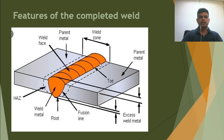This line is the toe — you can consider it on this side and on the root side also. This is the weld metal. This is the heat affected zone. This is called the root. This is called the fusion line. This is called the excess metal — from here to here and here to here, both are excess metal. Whatever metal is over the parent metal is called the excess metal. I will try to discuss all the terms.